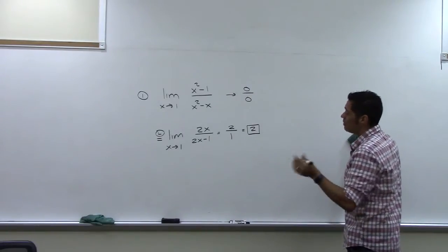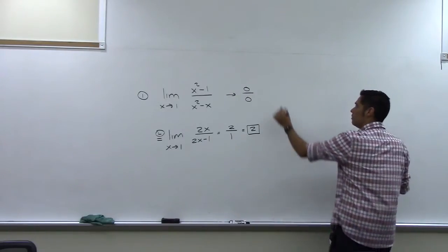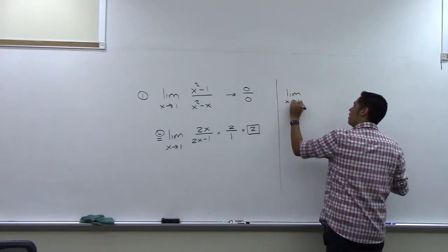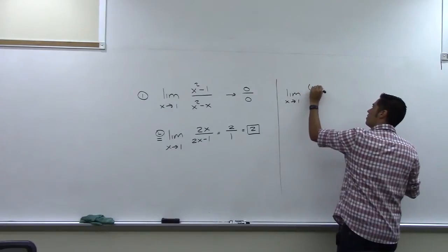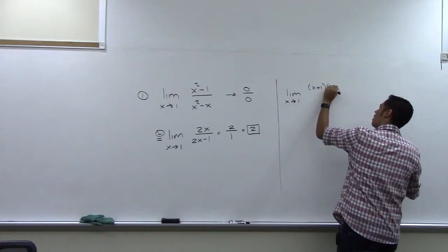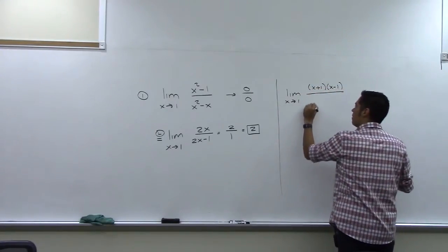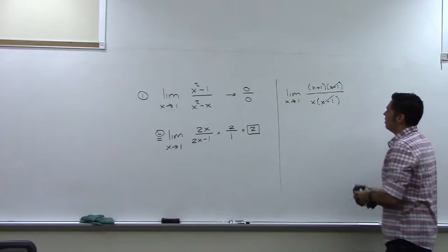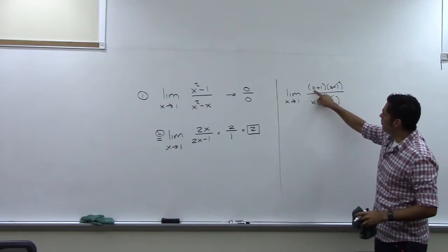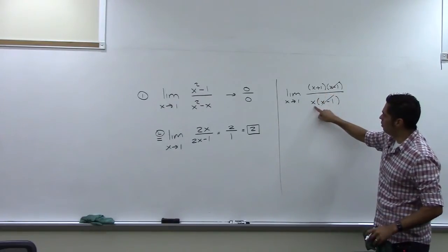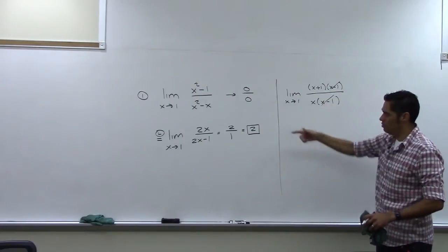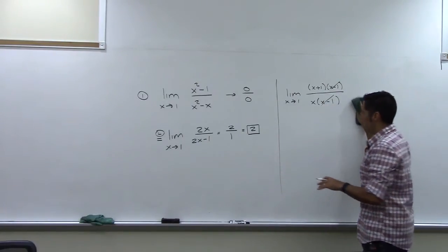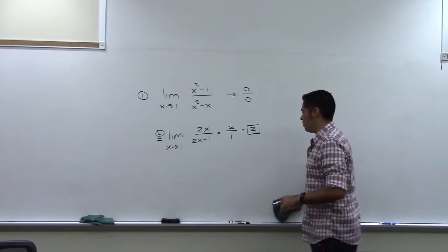We could have handled this the old way by factoring the top as a difference of squares, factoring the bottom by GCF, canceling those factors, and plugging in 1. We would get 1 plus 1 is 2 on top and 1 on the bottom, giving 2 over 1 which is 2 — the same answer. But we were able to do that without using any algebra at all, just using L'Hopital's Rule.